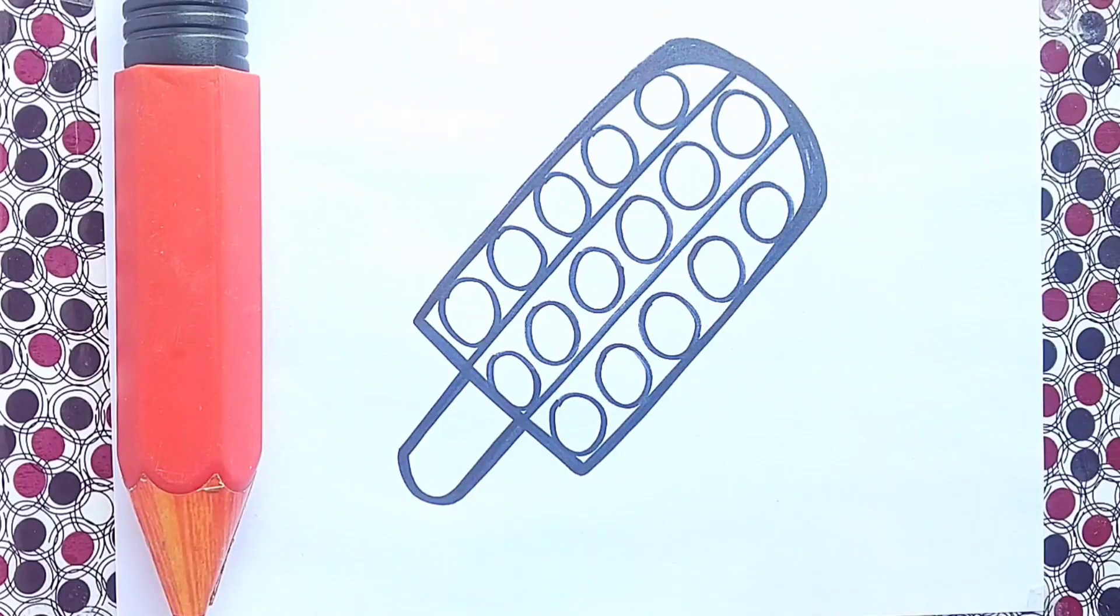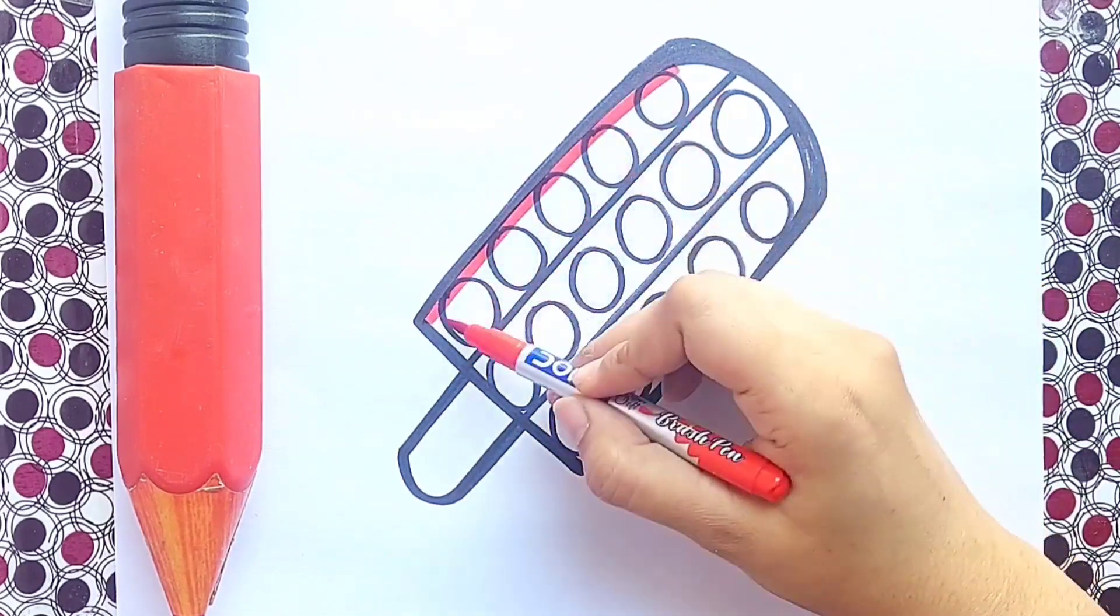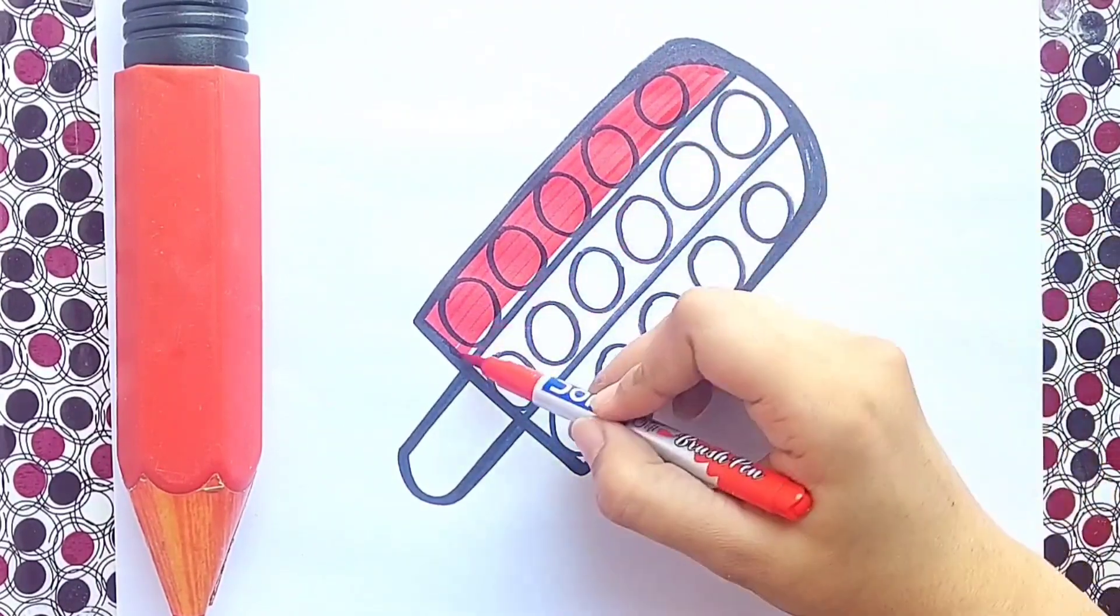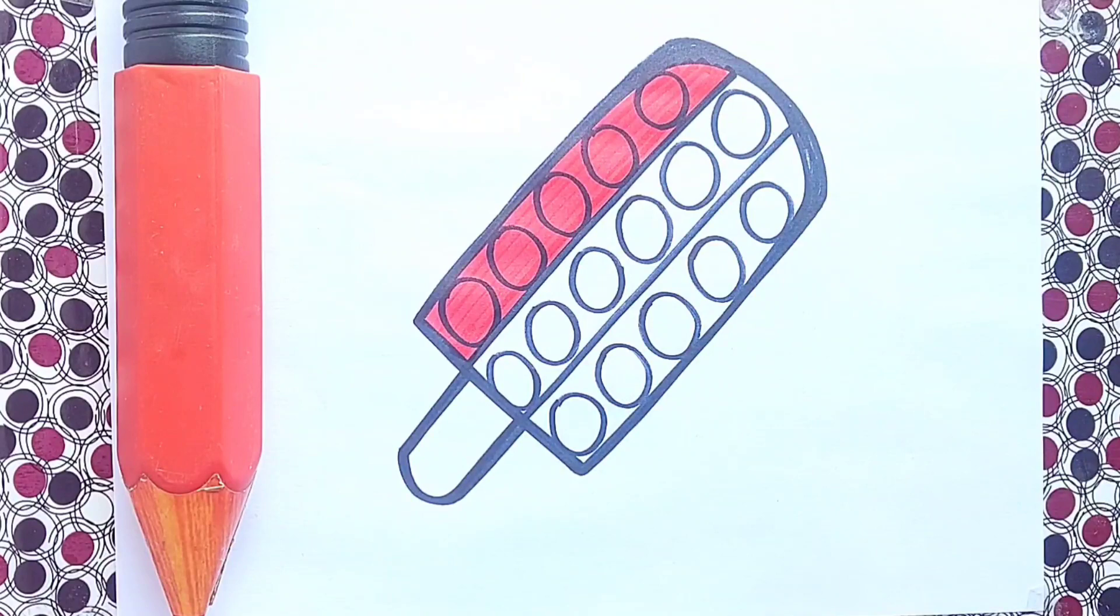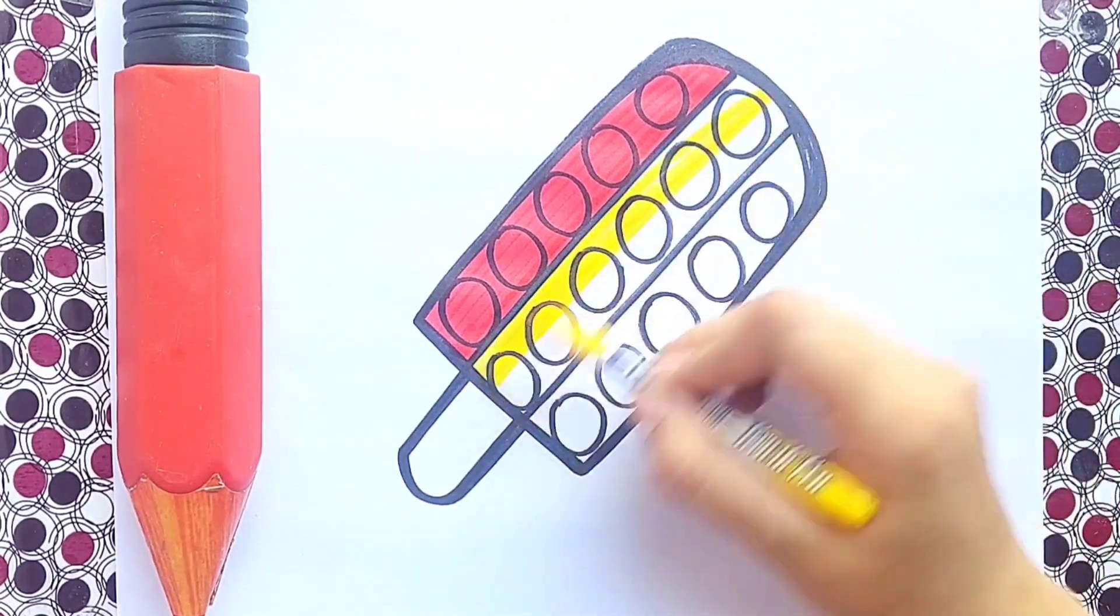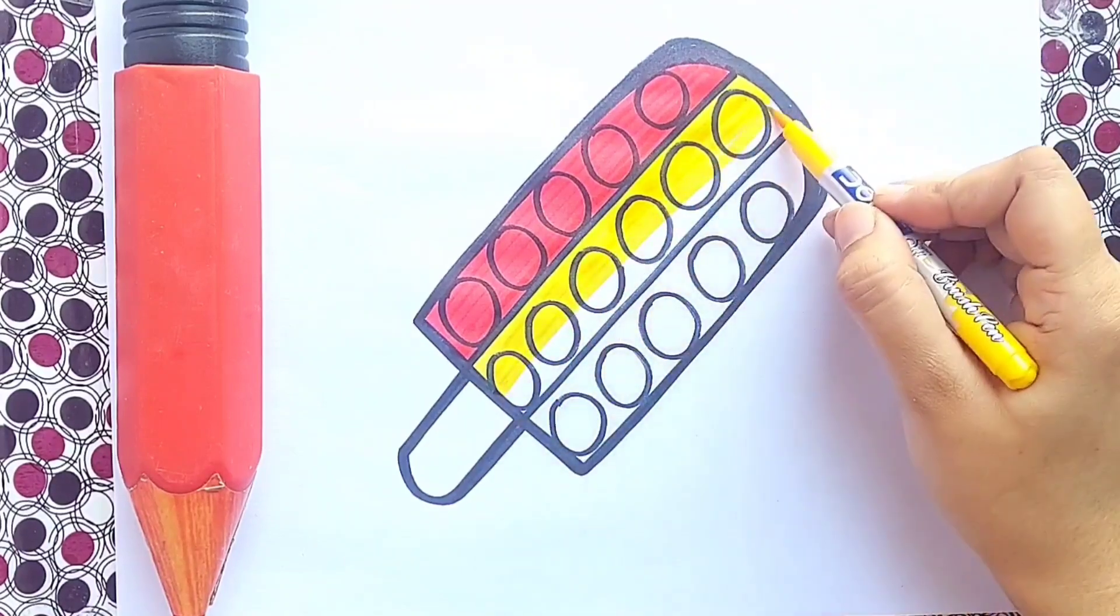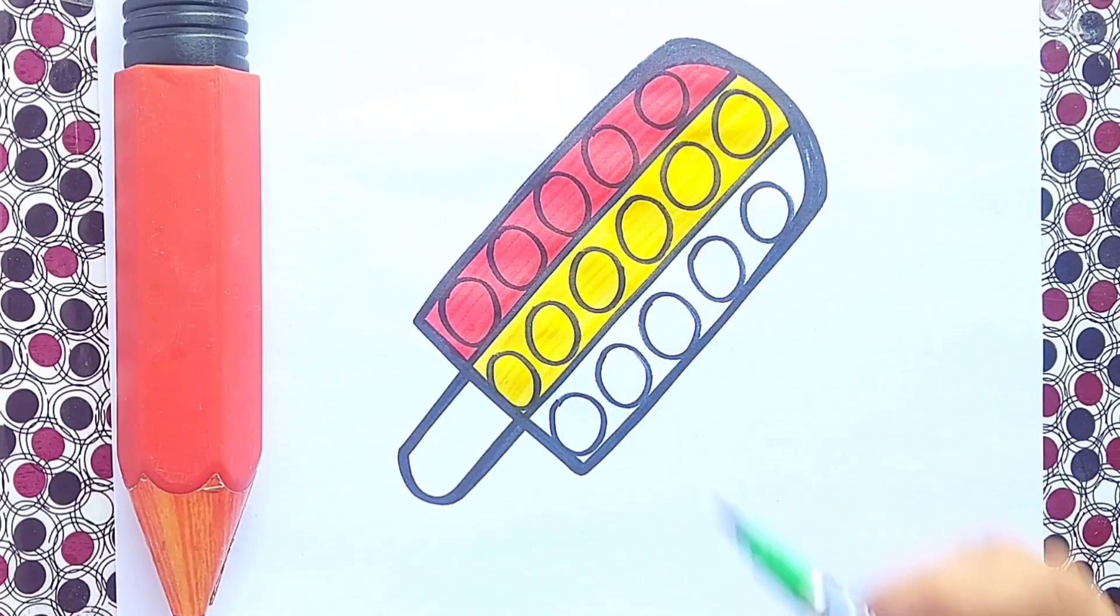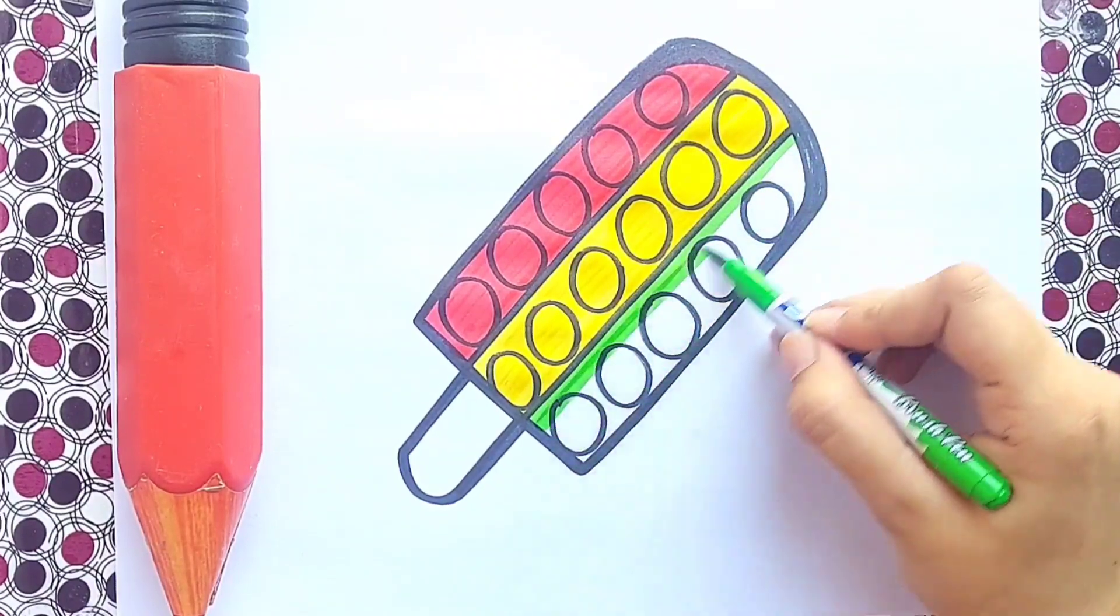Wow, our ice cream popsicle is ready! It's coloring time kids. I will choose red color. Great, now it's time to do yellow color. You can choose your favorite color kids. Now I'm going to choose light green color.